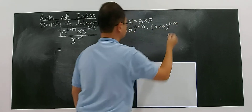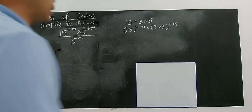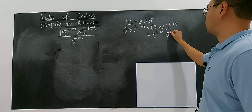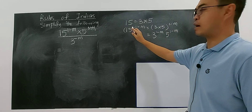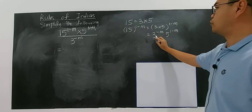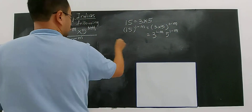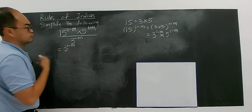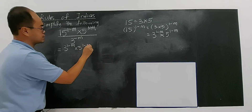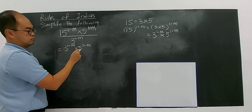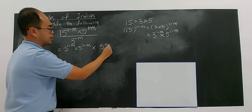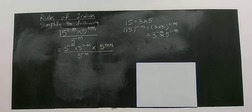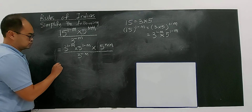Now I can apply the index rule: you can take 3 to the power 1 minus m and also 5 to the power of 1 minus m. I'll write this in the form of 3 and 5. So putting this into the expression: 3 to the power 1 minus m, multiplied by 5 to the power 1 minus m, then multiplied by 5 to the power m plus 1, divided by 3 to the power negative m.